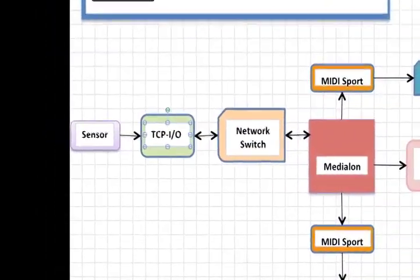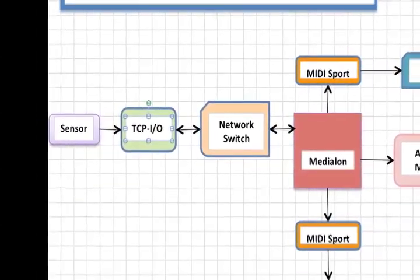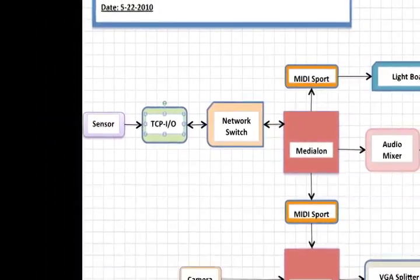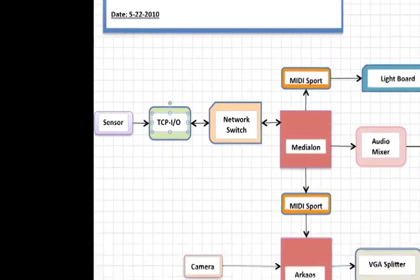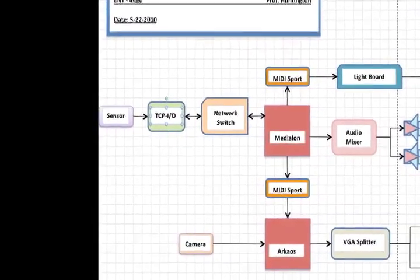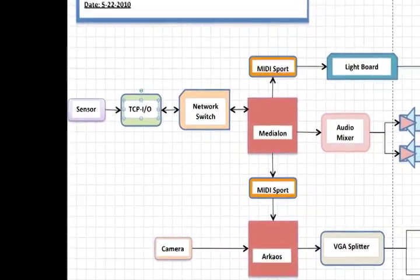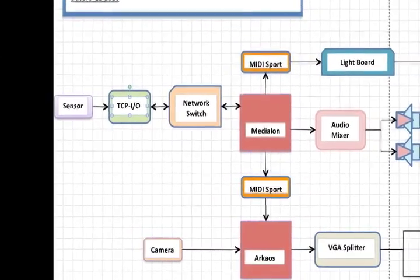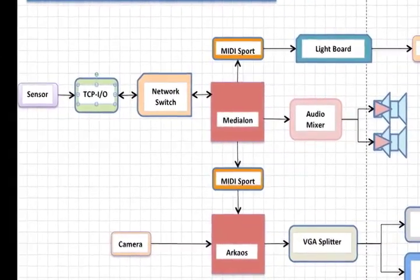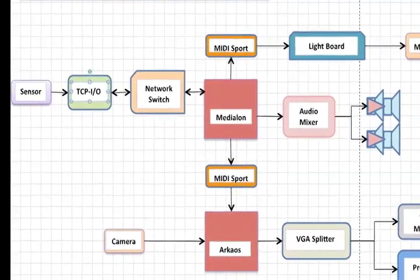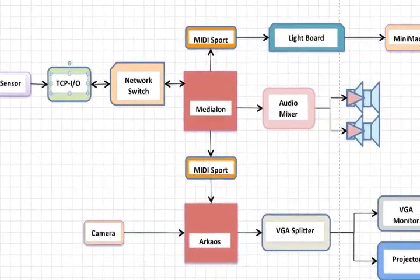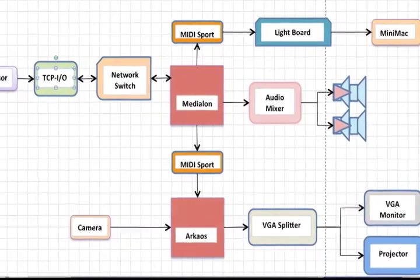The block diagram here shows the signal path: sensor to TCP I/O, TCP I/O to network switch, then into the MediaLon machine. The MediaLon machine is connected to two MIDI ports which send MIDI information to both the lighting board and the RKOS VJ software. The VGA splits to two different displays and the audio is played back directly from the MediaLon machine.